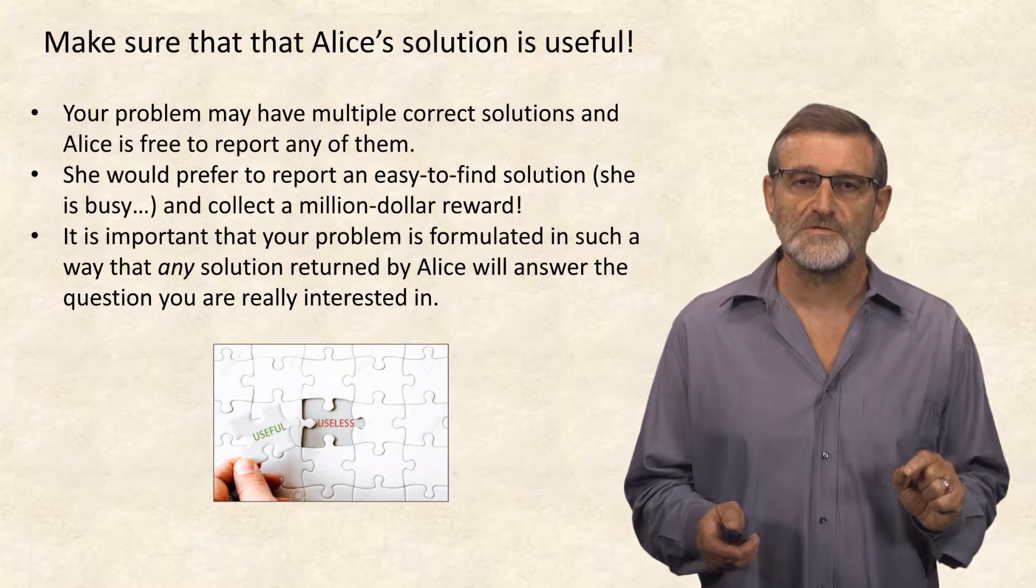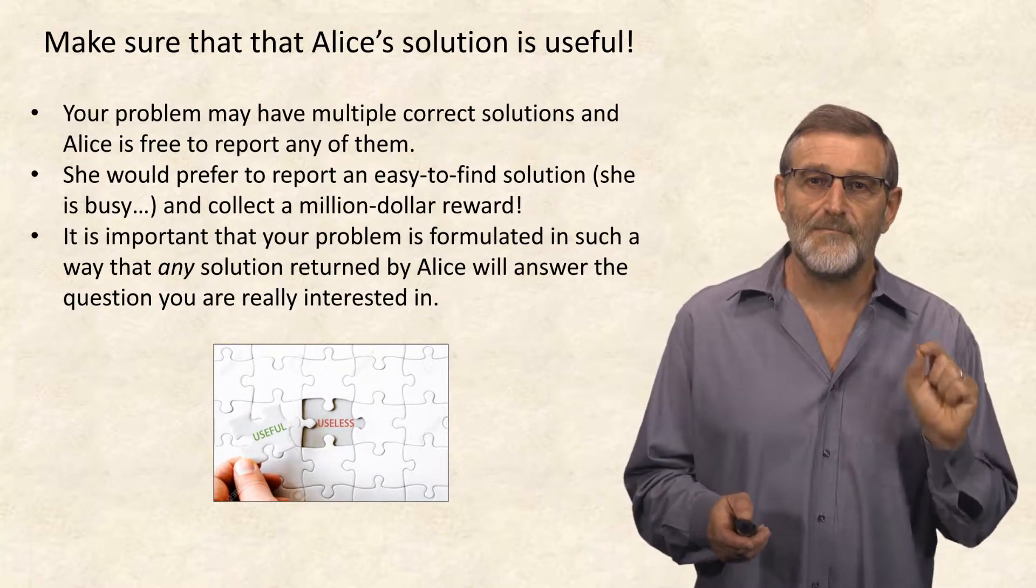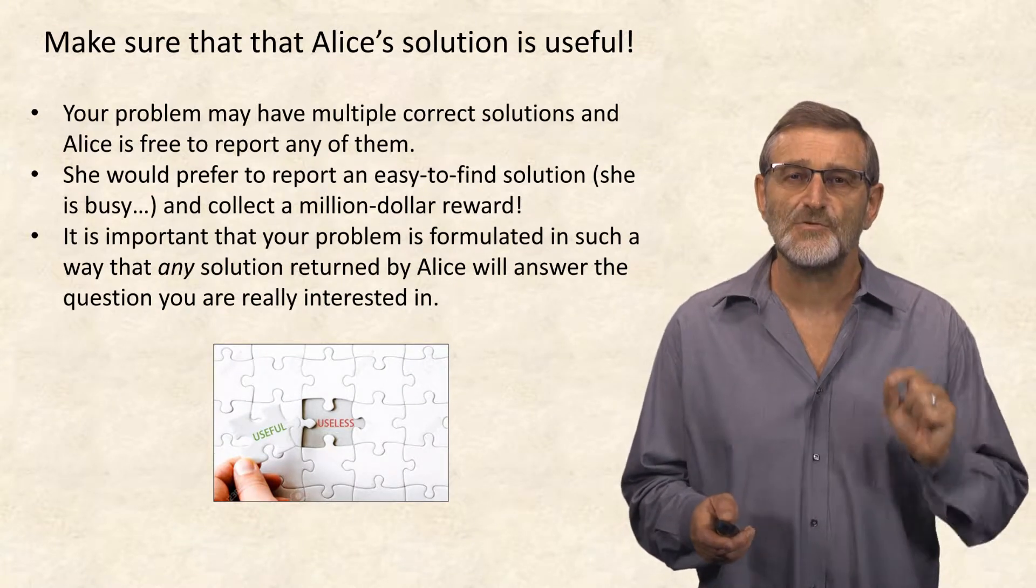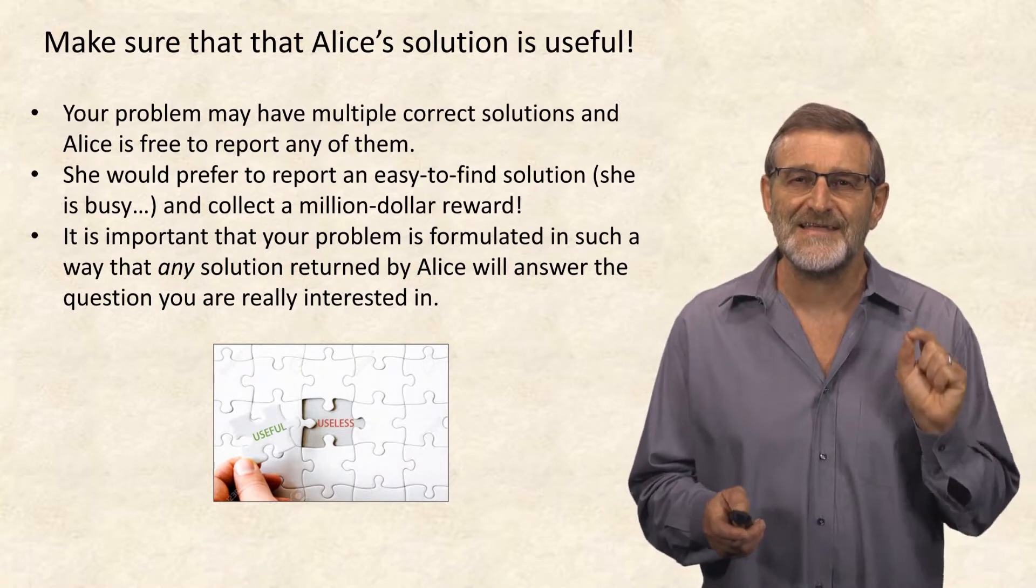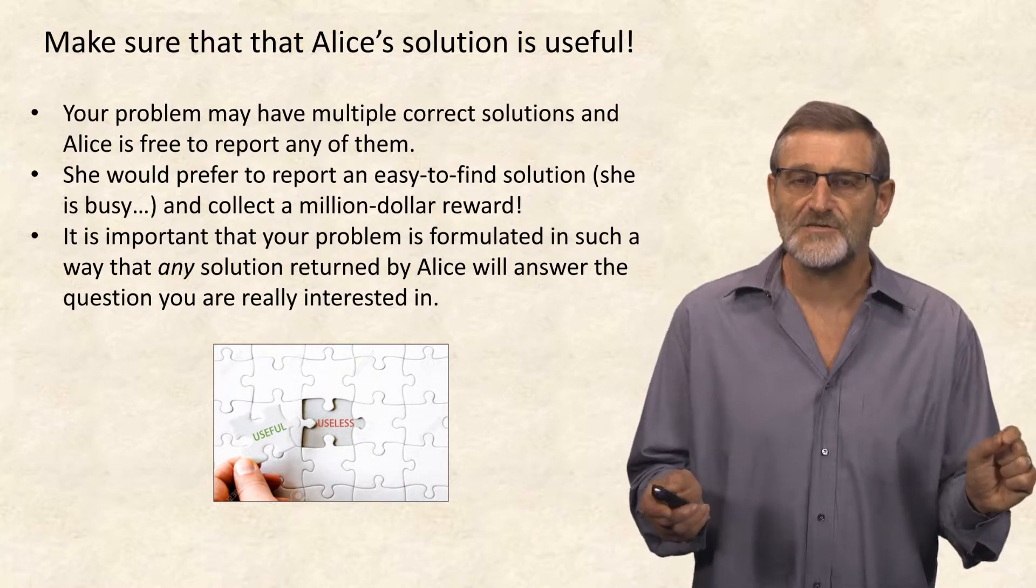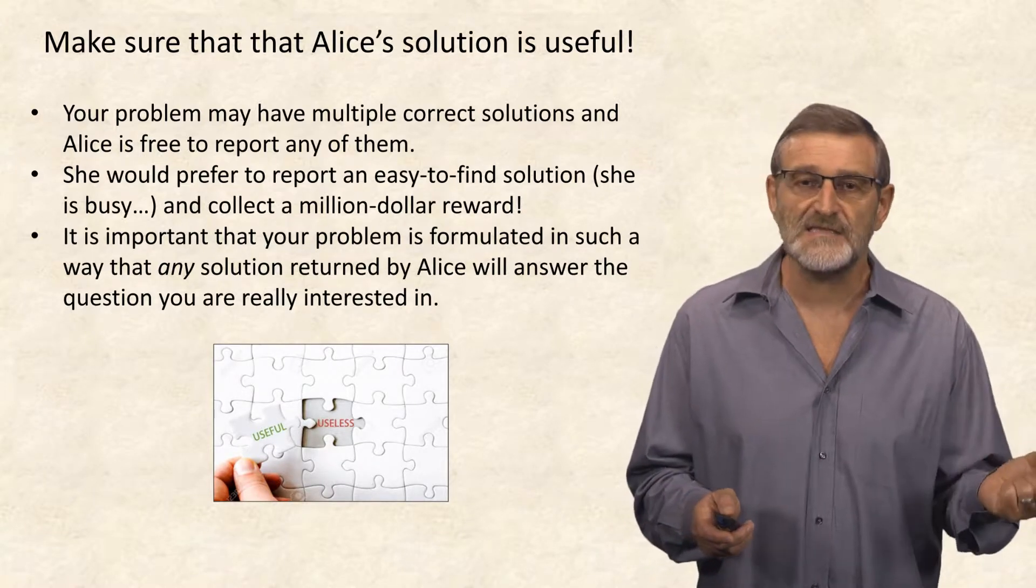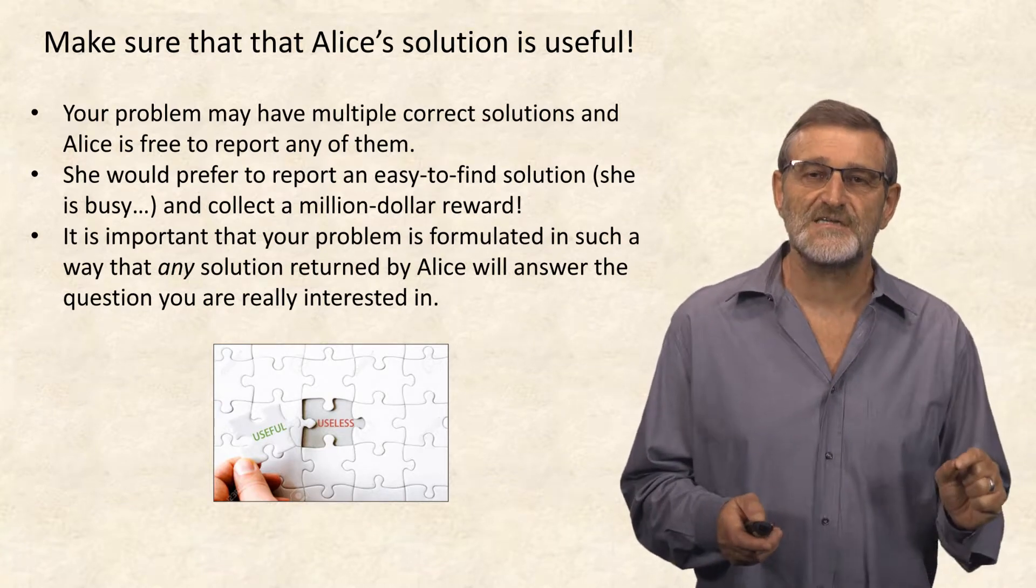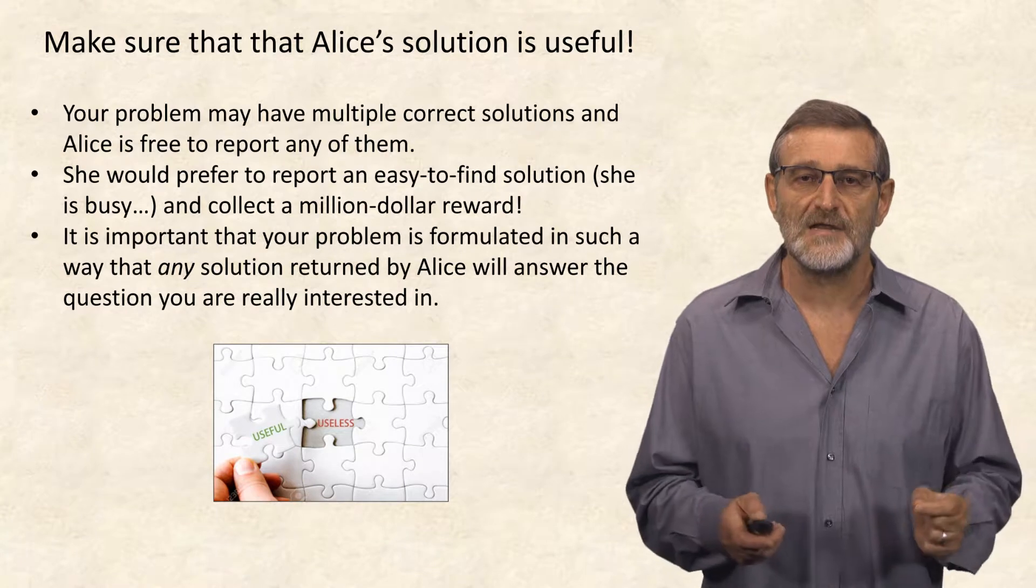However, there are certain rules for communicating with Alice. Your problem may have multiple correct solutions, and Alice is free to report any of them. She would prefer to report an easy-to-find solution because she is busy and collect a million-dollar reward. In this case, even if you have access to this brilliant computer scientist, you essentially waste a million dollars.